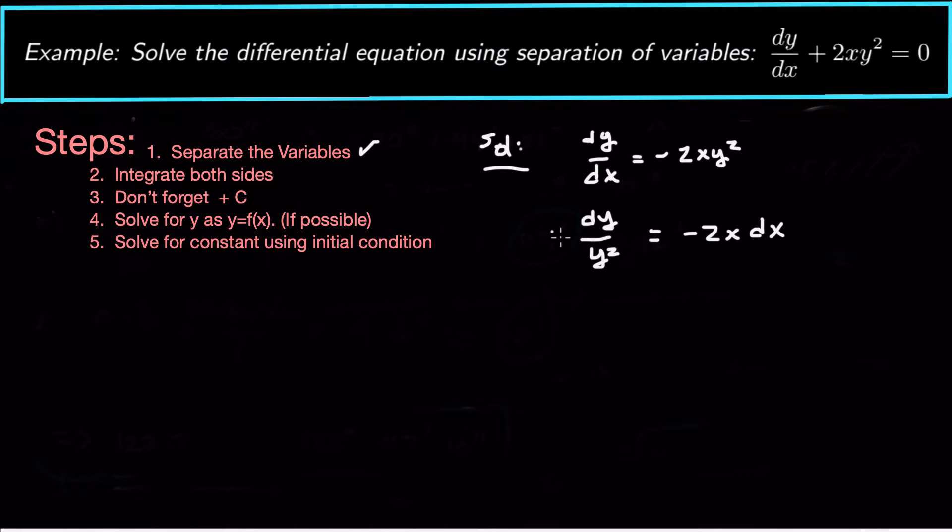Now integrate both sides. So on the left I need to integrate with respect to y. On the right I need to integrate with respect to x. So on the left that will give me negative 1 over y. On the right that's going to give me negative x squared plus c. And actually well I'll just leave it that way plus c.